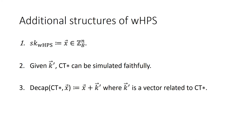Additionally, we need the following useful structure of weak HPS. First, the secret key is a vector from Z_B^n. Second, given vector k', the invalid ciphertext c* can be simulated faithfully. Third, the decapsulation of an invalid ciphertext c* using the secret key vector x equals vector x plus vector k', where vector k' is relative to the invalid ciphertext c*.